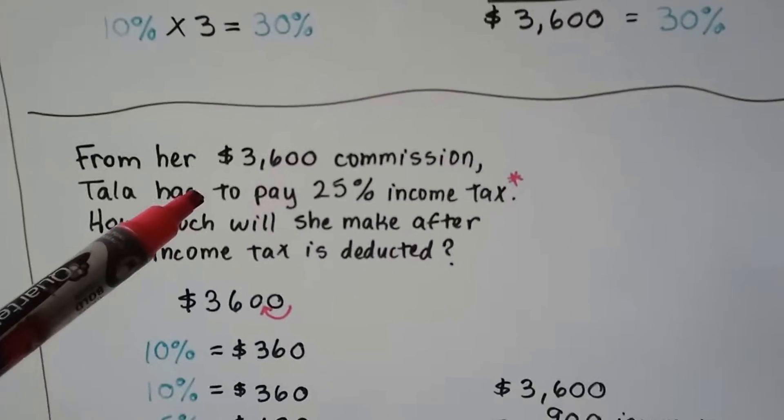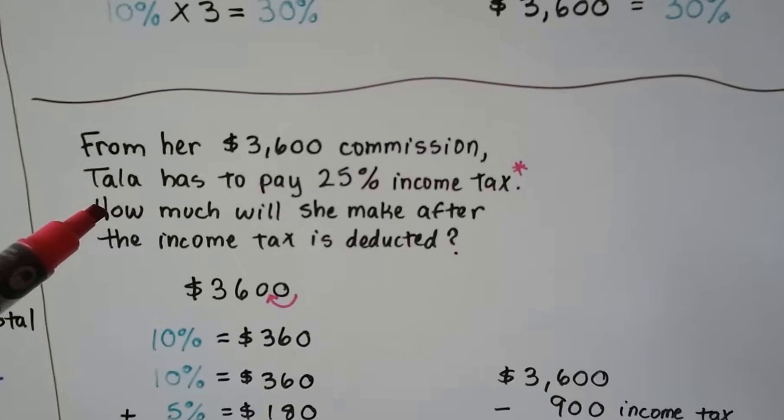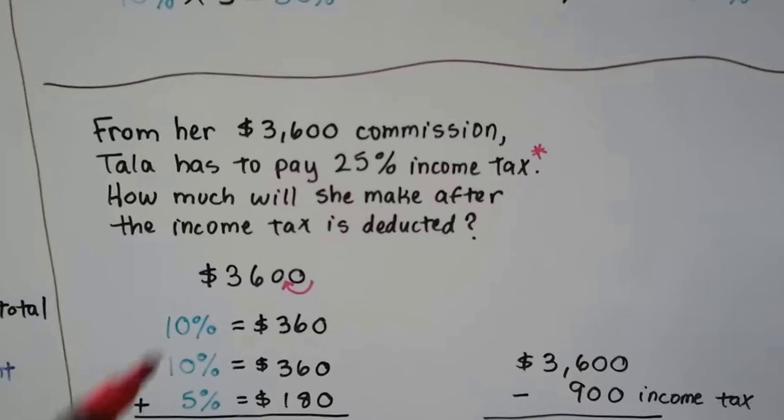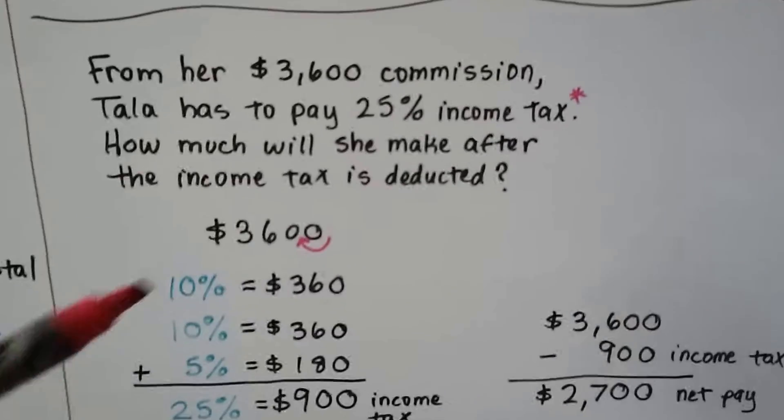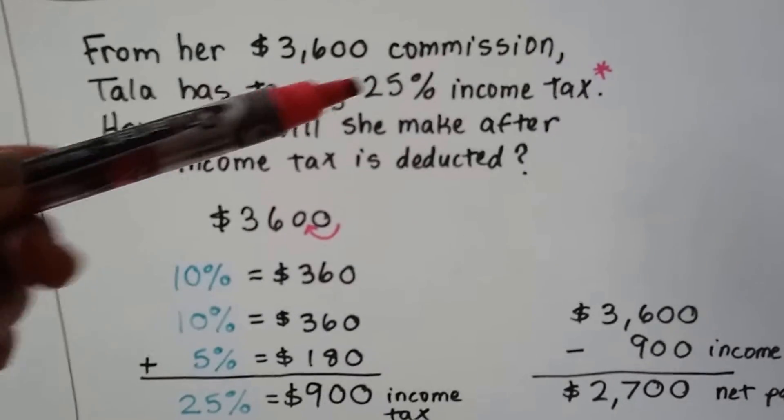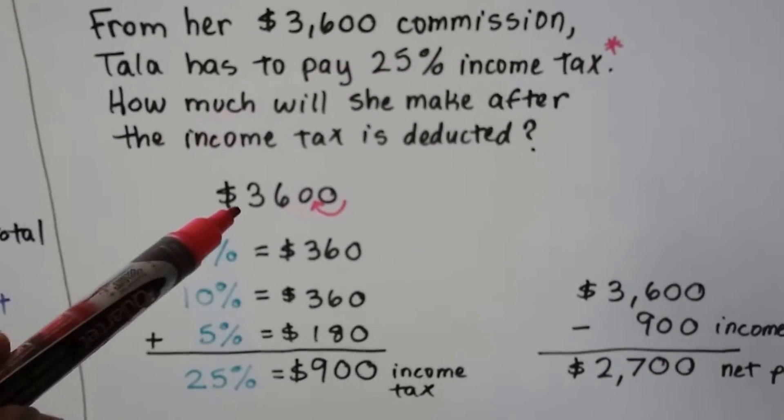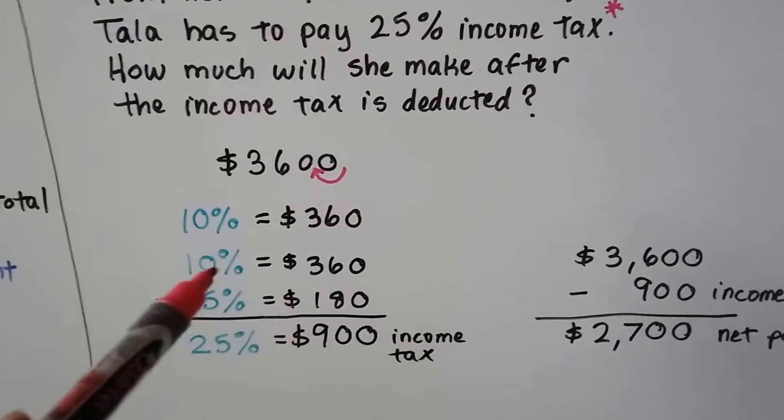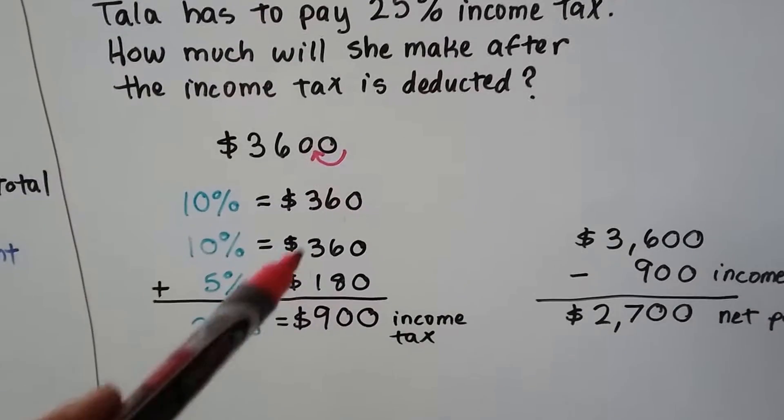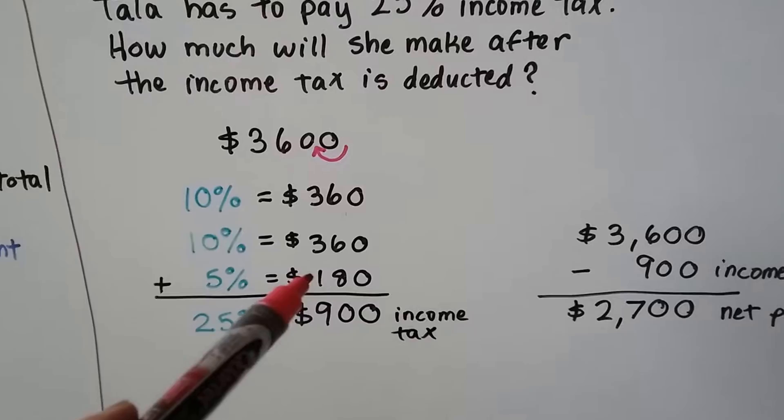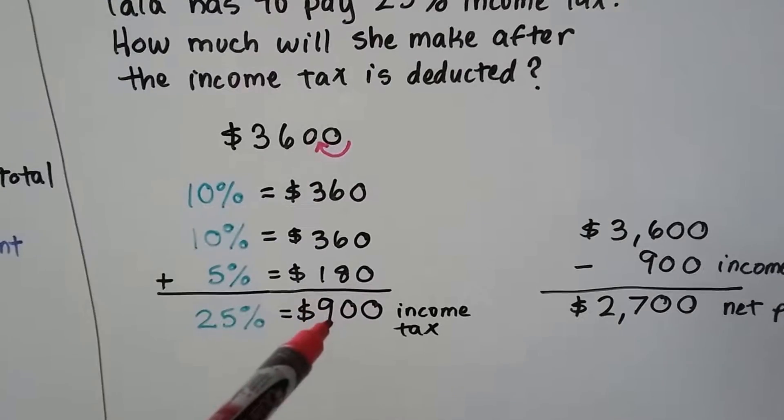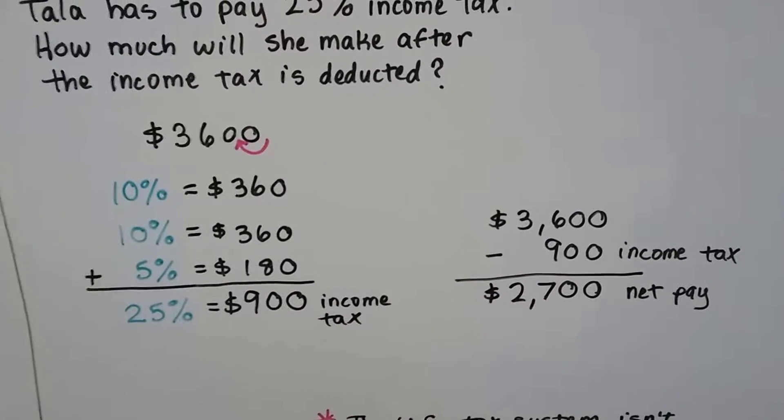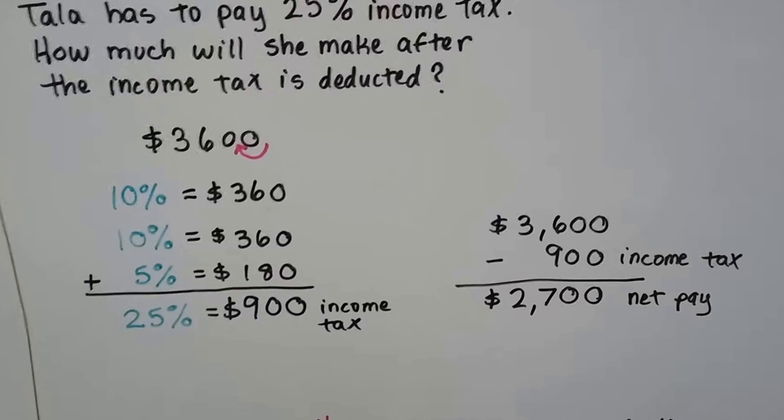Now from her $3,600 commission, she has to pay twenty-five percent income tax. So how much will she make after the income tax is deducted? Well, we could do that mentally too with the tens and the fives. Twenty-five percent is a ten, a ten, and a five. So we could do ten percent of $3,600 is $360. We could do another $360 as the other ten percent. Now that's twenty. And then we can cut that in half to $180. And we can add all of these up, and it's $900 of income tax. We just take that away from her commission, and she knows she's going to take home $2,700.